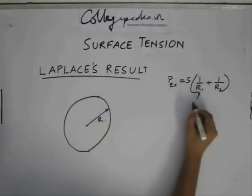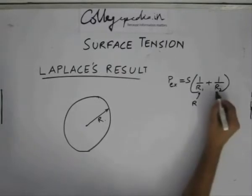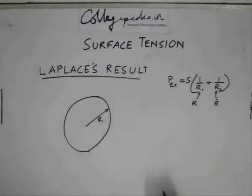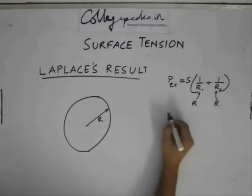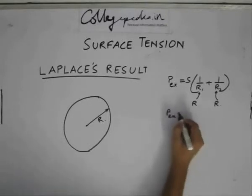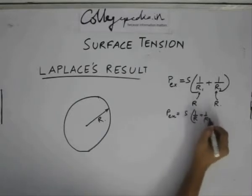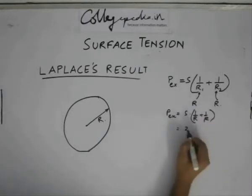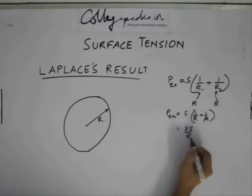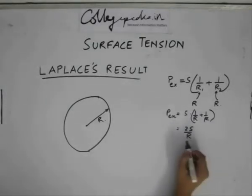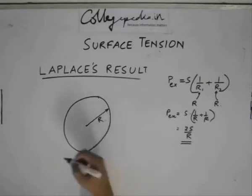So this can be replaced with r. This can also be replaced with r. And what we are left with is pxs being equal to s times 1 by r plus 1 by r which is equal to 2s by r. If you note, this is what we derived using force balance.